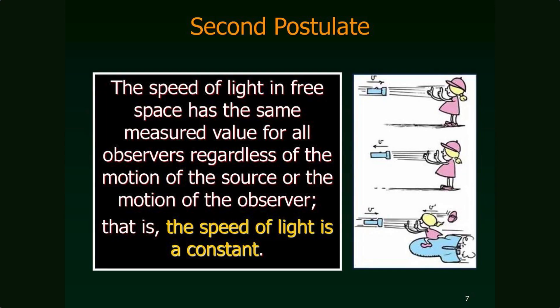Meaning the velocity v equals nought — the Earth is not moving. Most scientists, including Einstein, were absolutely certain the Earth must be moving round the sun at 100,000 kilometres an hour. So Einstein said there can't be an aether, and an observer will always measure the speed of light at c, no matter how the observer and the light source are moving.